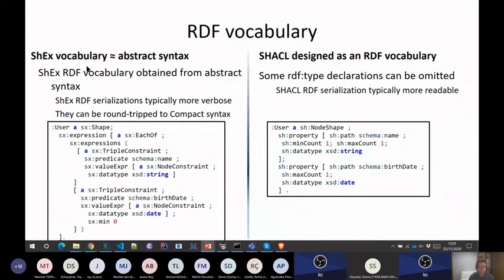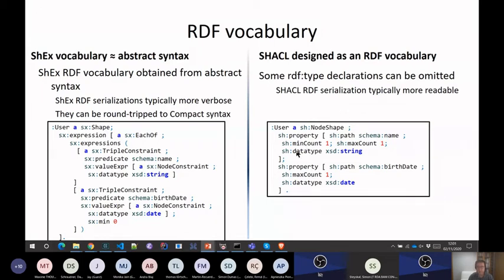About the RDF vocabulary: the ShEx representation in RDF — this is a clear winner for SHACL, because SHACL in Turtle is much more compact. Even though both are Turtle, the ShEx RDF representation is more verbose. The difference is that from ShEx's RDF you can generate the compact syntax, while from SHACL's RDF you cannot always generate the compact syntax. But at the end, SHACL in Turtle is much more compact and readable.